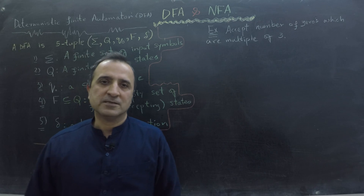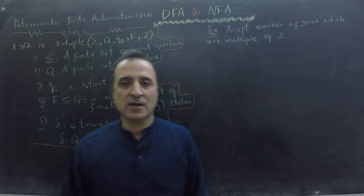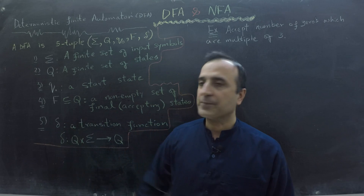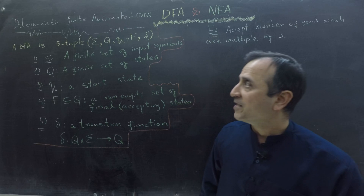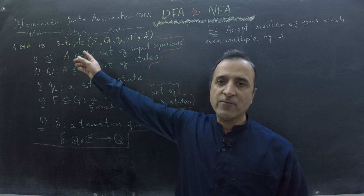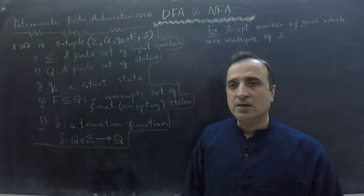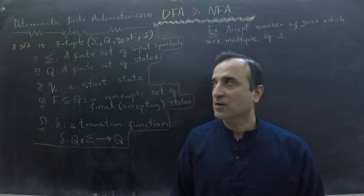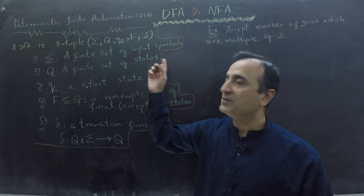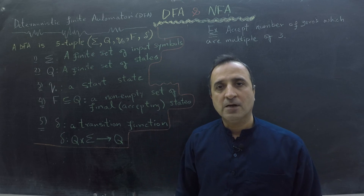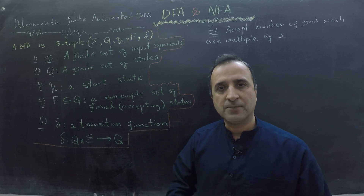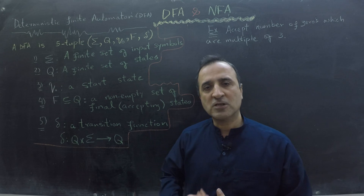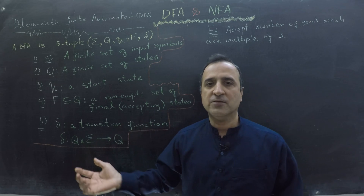Here is the definition of deterministic finite automaton, also known as DFA. A deterministic finite automaton is a five-tuple. Number one: sigma is a finite set of input symbols. To make this definition clear, I'm going to do an example and explain it mathematically as well as graphically.